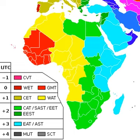East Africa Time is used by the following countries: Comoros, Djibouti, Eritrea, Ethiopia, Kenya, Madagascar, Somalia, South Sudan, Tanzania, and Uganda.